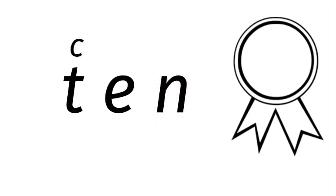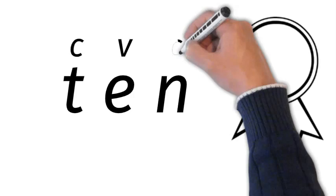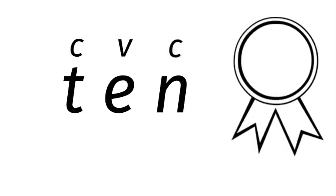The T is a consonant, the E is a vowel, and the N is a consonant. So it's called a CVC word.